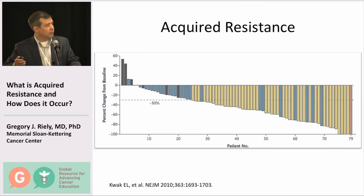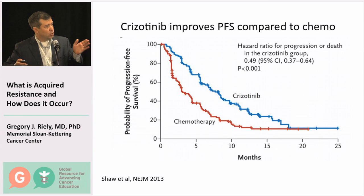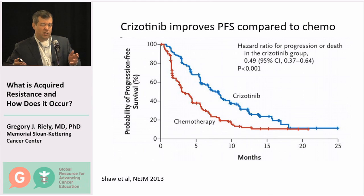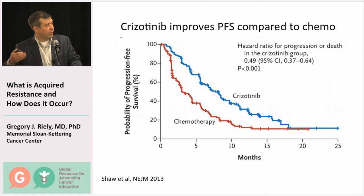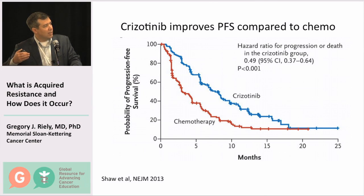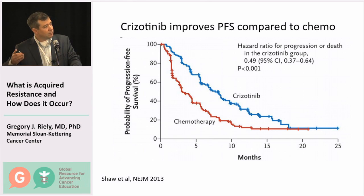I also wanted to show a survival curve. This is what we call a survival curve — a statistical term meaning time until an event occurs. This is a progression-free survival curve, showing time until a patient has had evidence of cancer growth. This graph shows a randomized trial comparing crizotinib to chemotherapy for ALK-positive lung cancer patients previously treated with chemotherapy. The graph drops down each time a patient has evidence of progression.